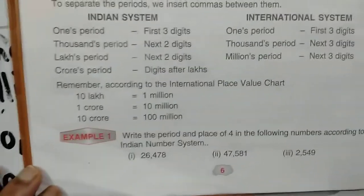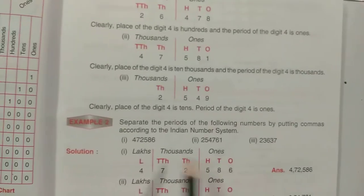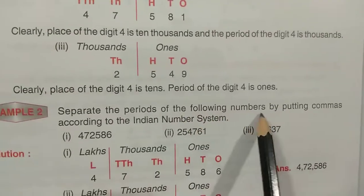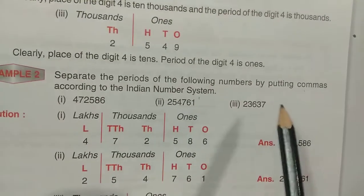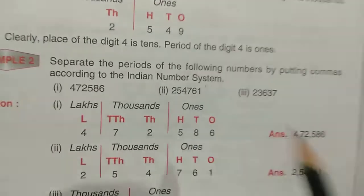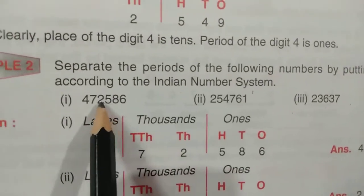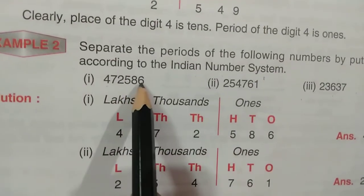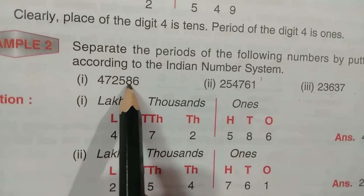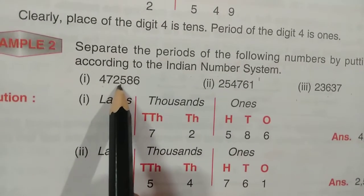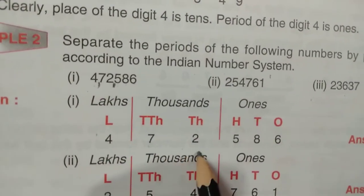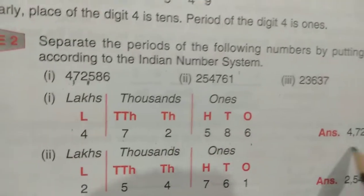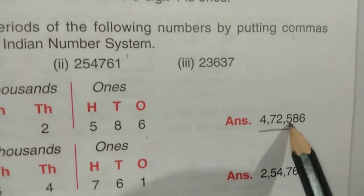Now let's do examples. Separate the periods of the following number by putting commas according to the Indian number system. In Indian number system: first three digits, then two, then two. The number has ones, tens, hundreds — first comma here, then two digits for thousands, then two for lakhs. So the answer is four lakh, seventy-two thousand, five hundred eighty-six — written as 4,72,586.